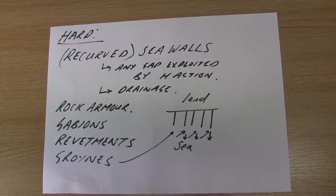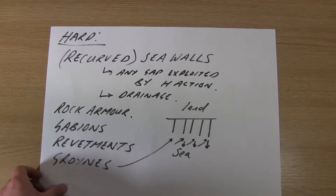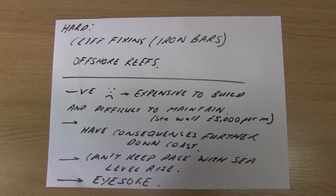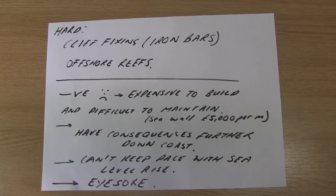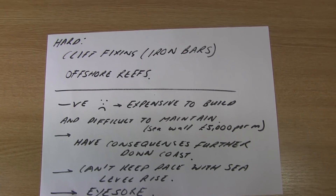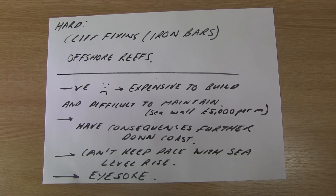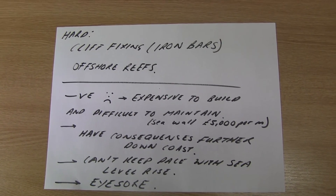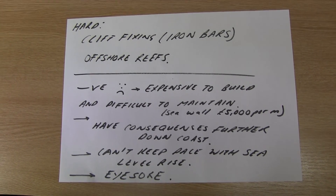A bigger beach means waves have further to travel, energy is dissipated, and the effects of erosion are reduced. There are some hard engineering strategies you may not have heard of. Cliff fixing involves inserting iron bars into the cliff to stop it collapsing — commonly used where there is rotational slumping and mass movement. Offshore reefs are designed to break the power of waves early, causing them to rise up and plunge before hitting the coastline, reducing the energy and therefore the erosion that occurs.